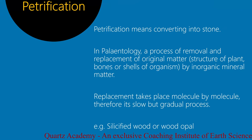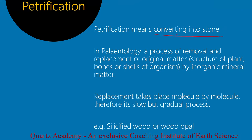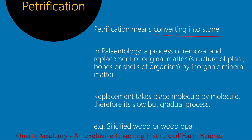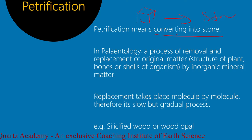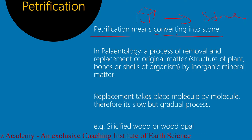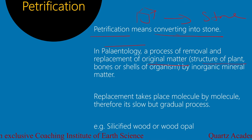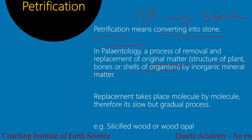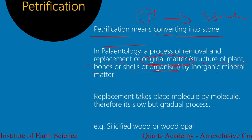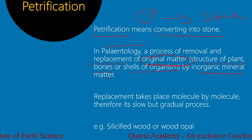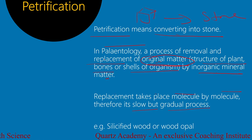What is petrification? Petrification means converting into stone. Any organism which is completely dead, whose body is completely converting into stone — that process is called petrification. In paleontology, it is a process of removal and replacement of the original matter — whether the structure of a plant, a bone, or the shell of an organism — by inorganic mineral matter. This replacement takes place molecule by molecule; therefore it is a slow but gradual process.